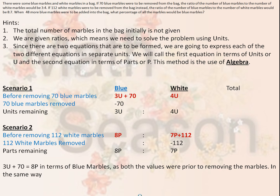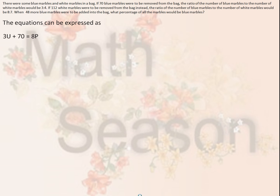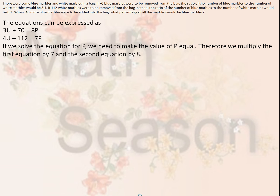Since both values were prior to removing the marbles, 3u plus 70 equals 8p in terms of blue marbles. In the same way, 4u equals 7p plus 112, which rearranges to 7p equals 4u minus 112 for white marbles. The two equations are: 3u plus 70 equals 8p, and 4u minus 112 equals 7p.